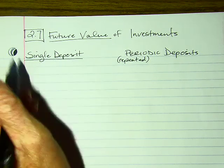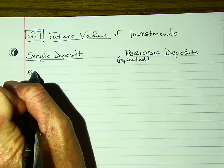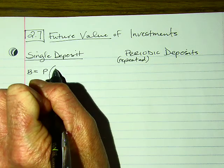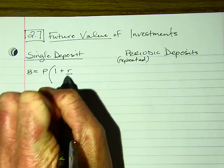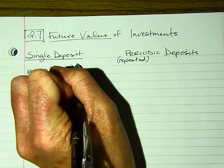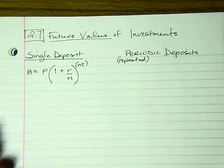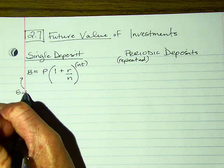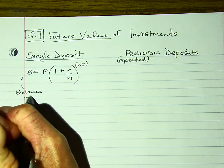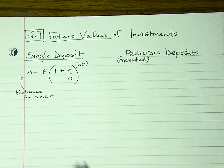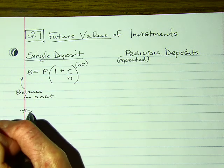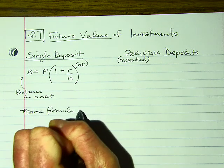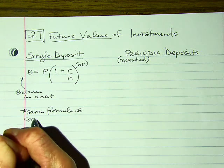For the single deposit, your formula is: Balance = P × (1 + r/n)^(n×t). The B stands for balance in account. Notice this is the same formula as compound interest.